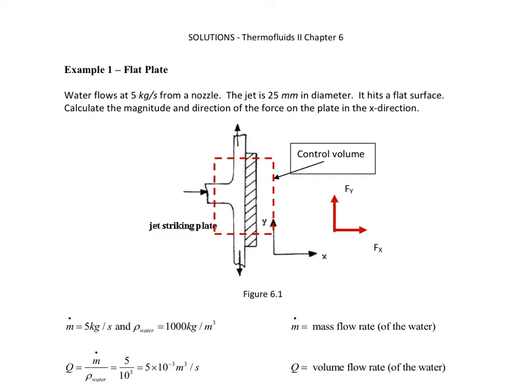In example one, we will look at a flat plate. In example two, we will look at a curved plate. In example three, we will look at a transition piece from a pipe going from a larger diameter to a smaller diameter.